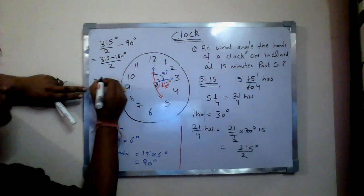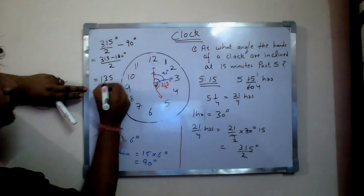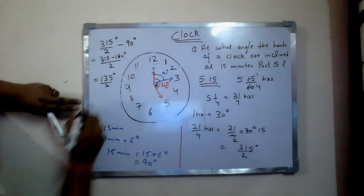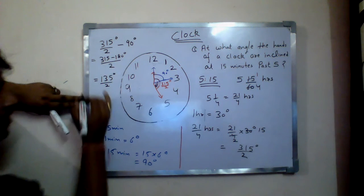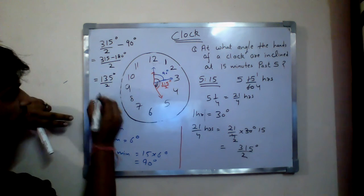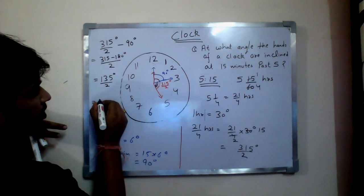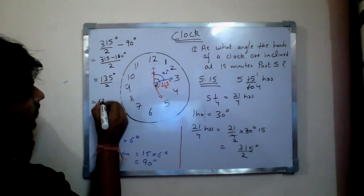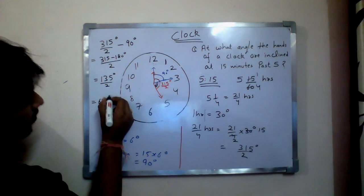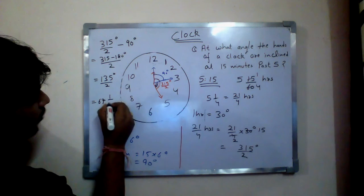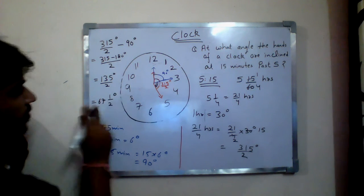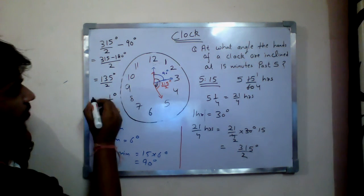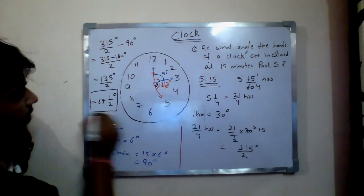That gives us 135/2. Converting to mixed number form: 135/2 = 67 and 1/2 degrees. So the answer is 67 and 1/2 degrees.